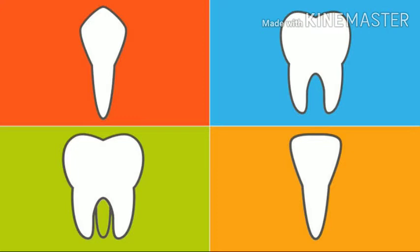Premolars are the large teeth just behind the canines on each side. Premolars have a large flat surface. They are used for chewing and grinding the food. There are four premolars in a jaw, two on each side.